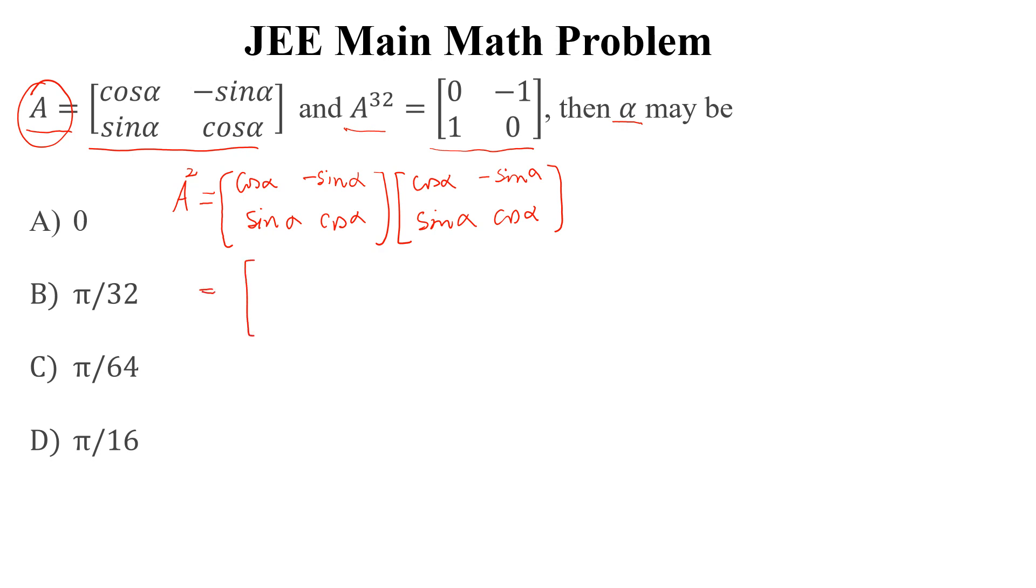We will simplify this and this is equal to cos²α minus sin²α, and here this is equal to minus 2sinα cosα.